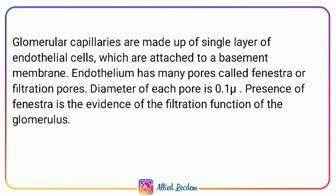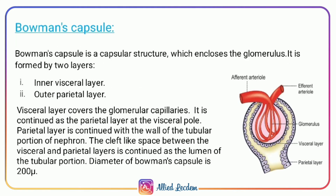Glomerular capillaries are made up of a single layer of endothelial cells which attach to a basement membrane. The endothelium has many pores called fenestra or filtration pores. The diameter of each pore is 0.1 micrometers. The function of the glomerulus is filtration due to the presence of these fenestra or filtration pores.